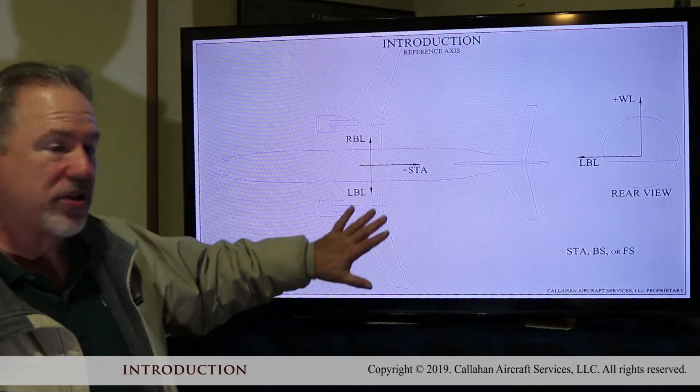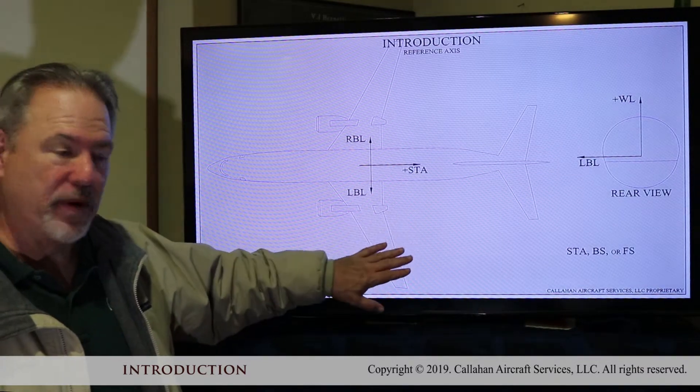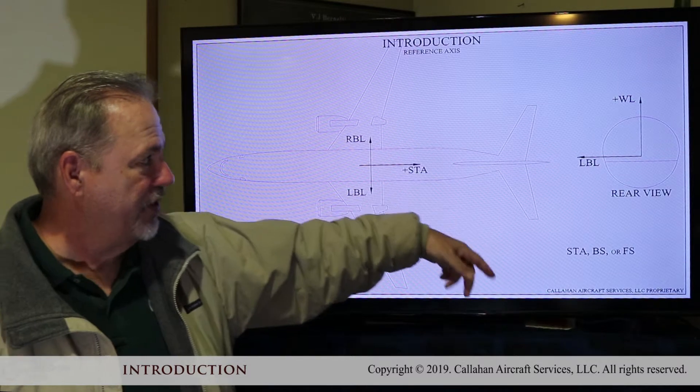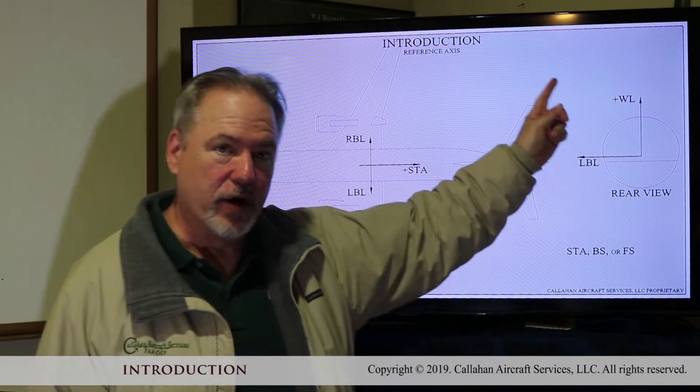Okay, now I'll just show you the planned view of the airplane. Butt line, right, left, station going aft, and water line going positive up.